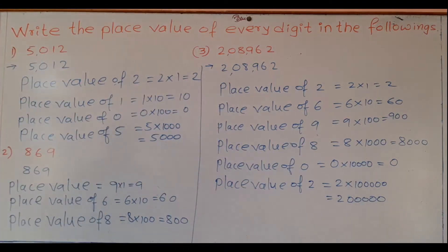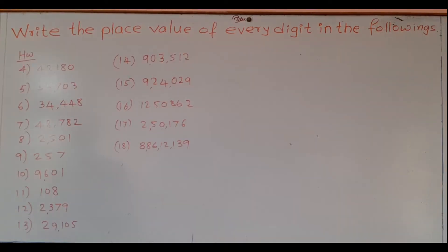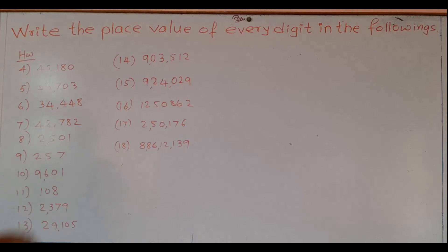So these are the place values of the digits. Now you can do this as homework — from problem 4 to 18 the sums are given. You work out these problems and send them to me.